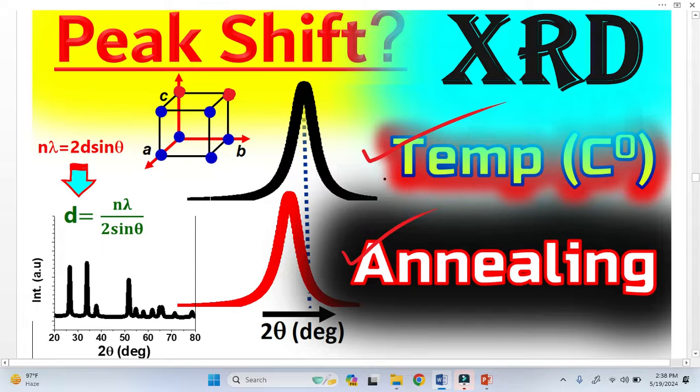let's suppose this is one plane here, and this is another parallel plane here. The distance between these two planes we call D, and this D is called interplanar spacing,